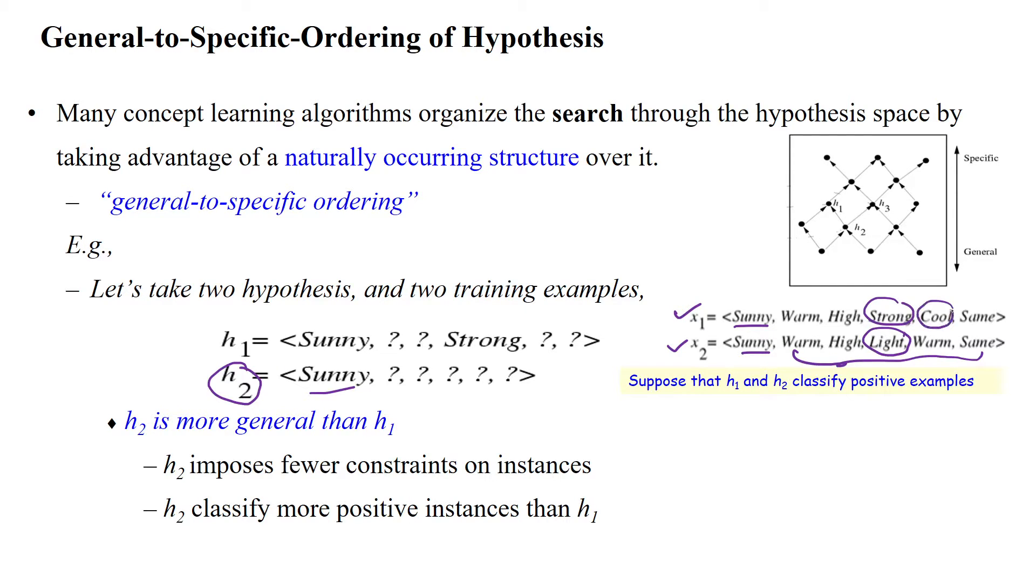These two attributes have two different values, but due to general constraint question symbol, it will accept any values. So this is more general than h1.